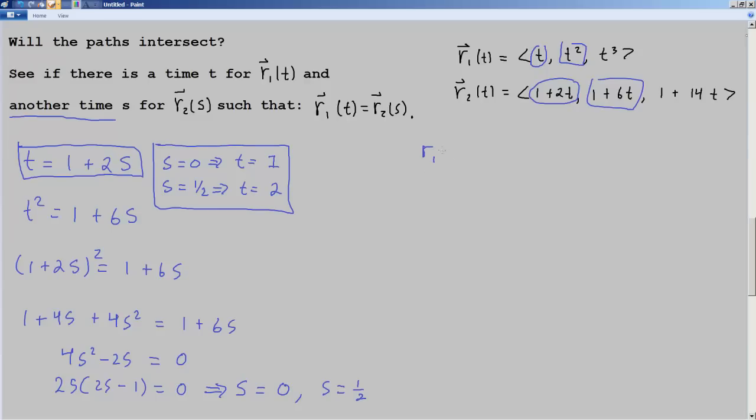We find r₁ of 1 and that's 1, 1, 1. And then we'll find r₂ of 0 because remember 1 and 0 are paired together here. And that's going to be 1, 1, 1. So this is a match. This is a point in space where the particle paths that they trace out actually intersect.